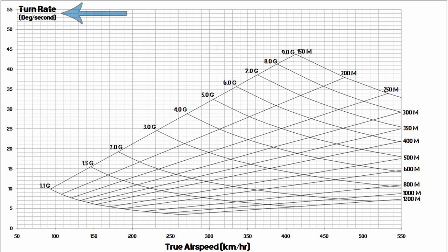On the y-axis we're graphing the turn rate in degrees per second, and on the x-axis we're graphing true airspeed in kilometres per hour. Everything in the middle, shaded in green, is where we're overlaying the airplane's performance.